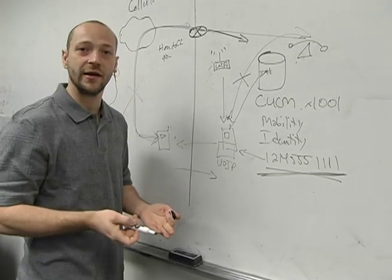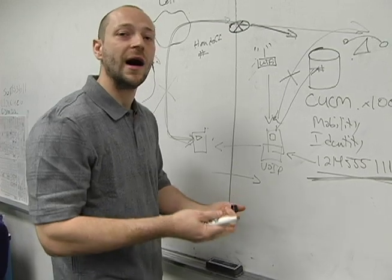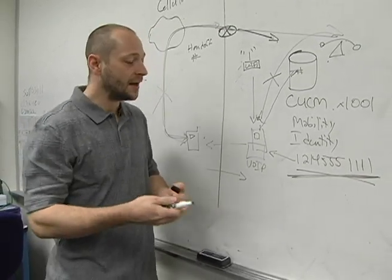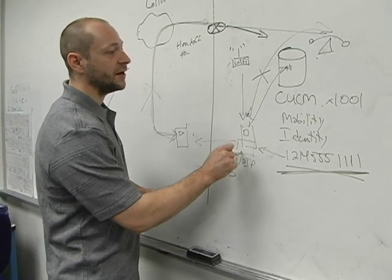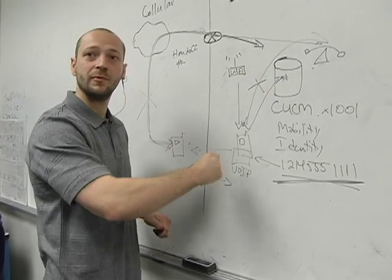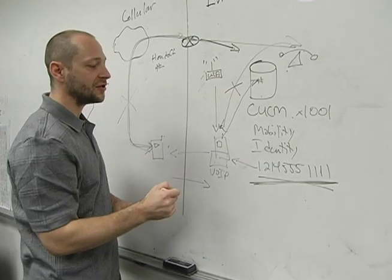It could be Cisco Mobile on an iPhone. It could even be a BlackBerry client through MVS. Some sort of mechanism here to signal over IP. We're running either Skinny or SIP protocol to Communications Manager.